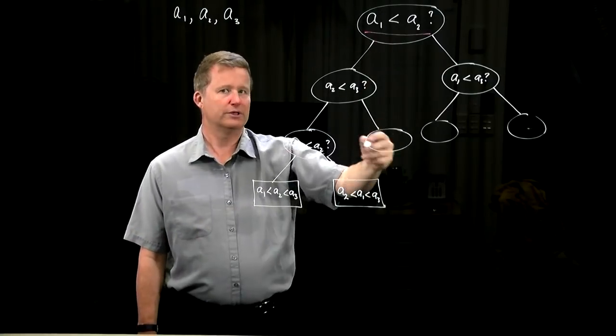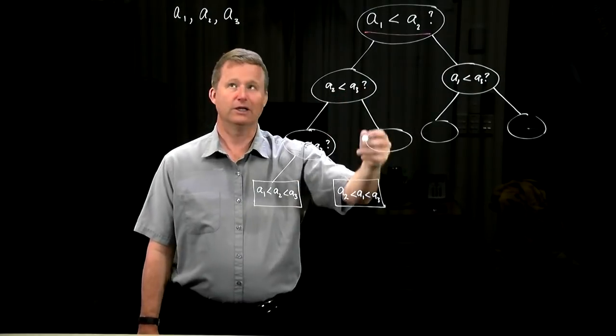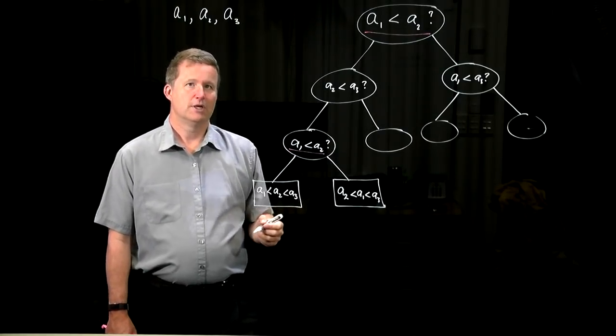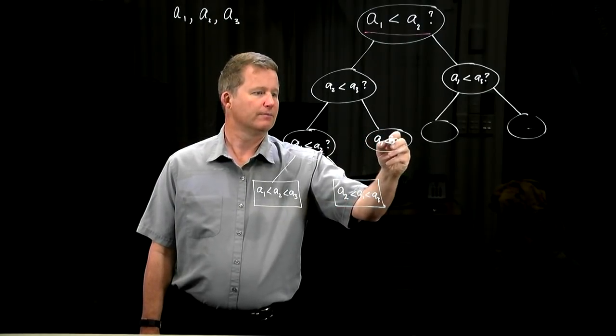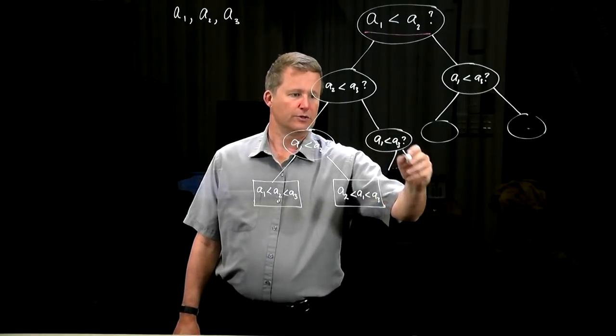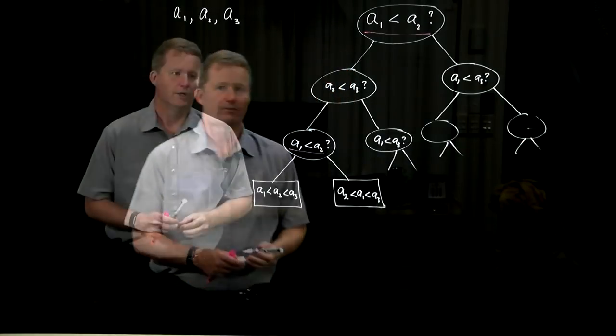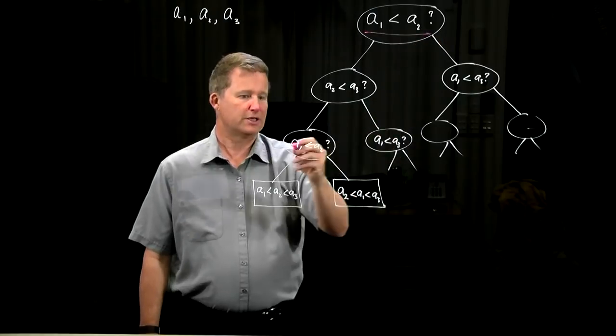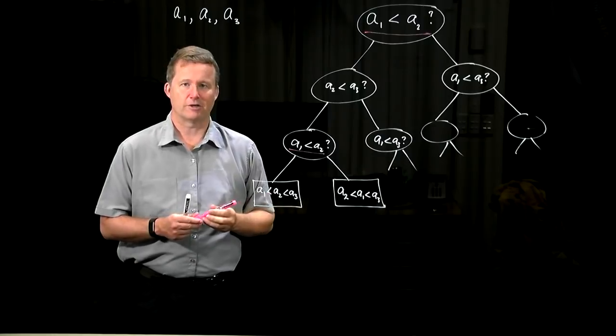Over here, we wouldn't ask it, because here a2 is bigger than a3 in this branch. That meant a2 was the maximum. So next, we would swap it in to the end, and we would compare a1 and a3. And we would continue down there. But it is possible that we have inefficiency by asking the same question twice. That's why selection sort is inefficient, it's too many comparisons.